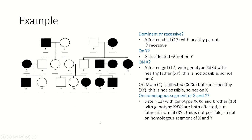Is it on X? Because it is recessive, I look for an affected girl with a healthy father. This girl is affected - if the gene was on X, her genotype would be X-d X-d. One X-d must come from her father, but her father is normal. So it's not on the X chromosome. Alternatively, an affected mom with a healthy son also disproves X-linkage.